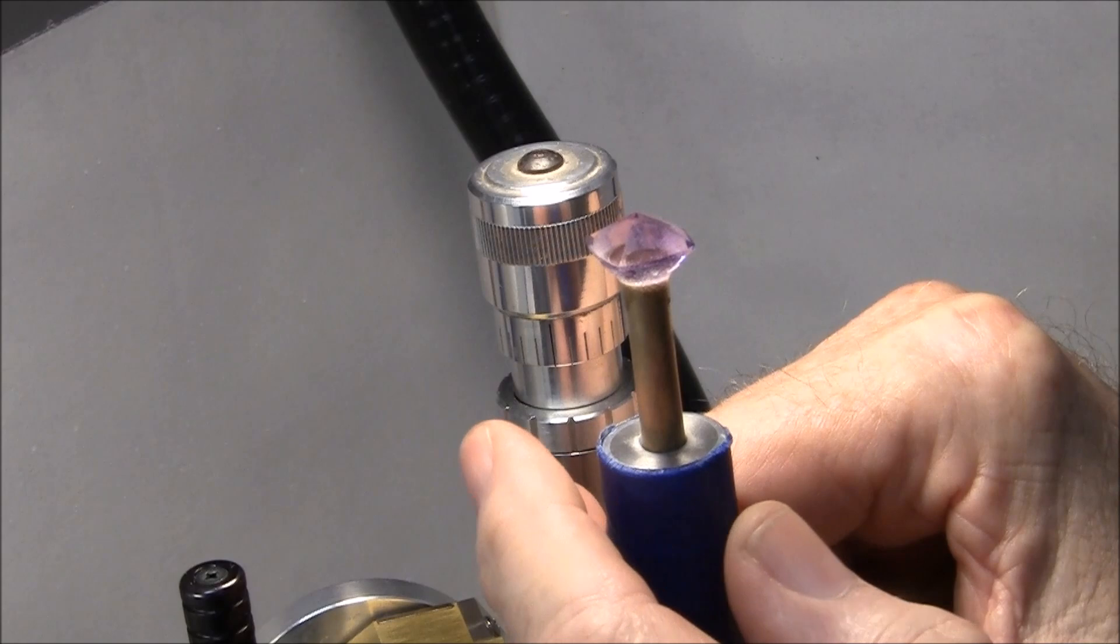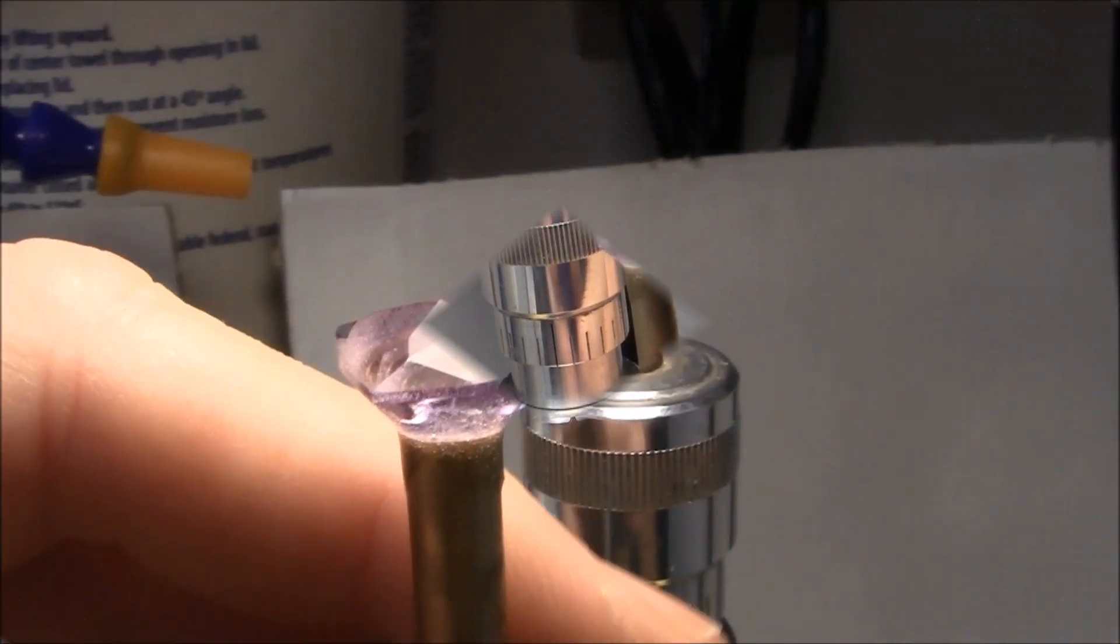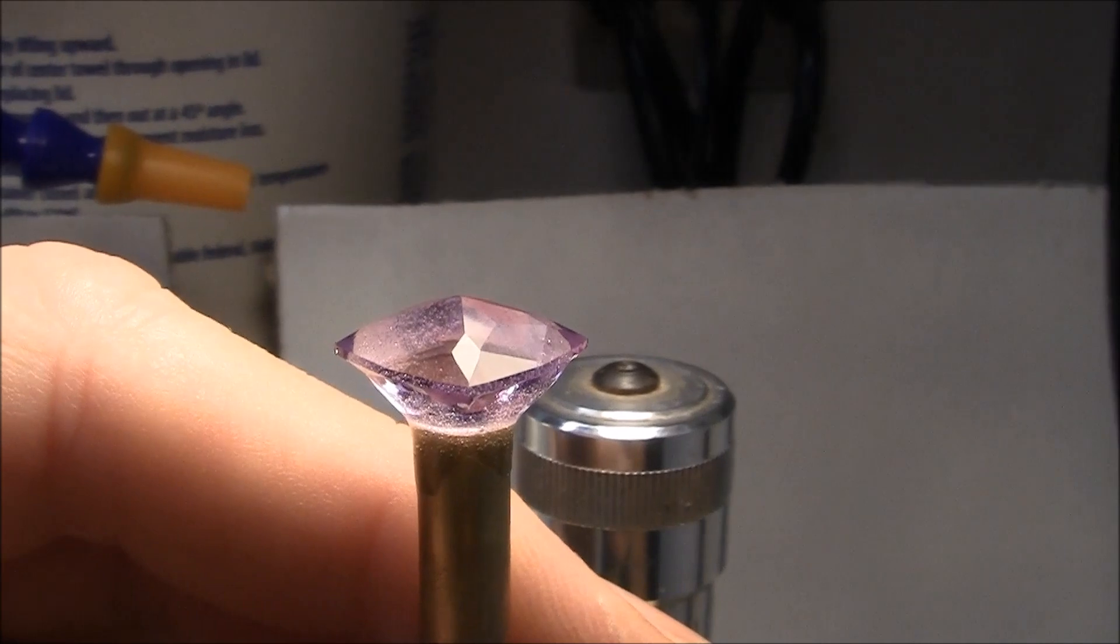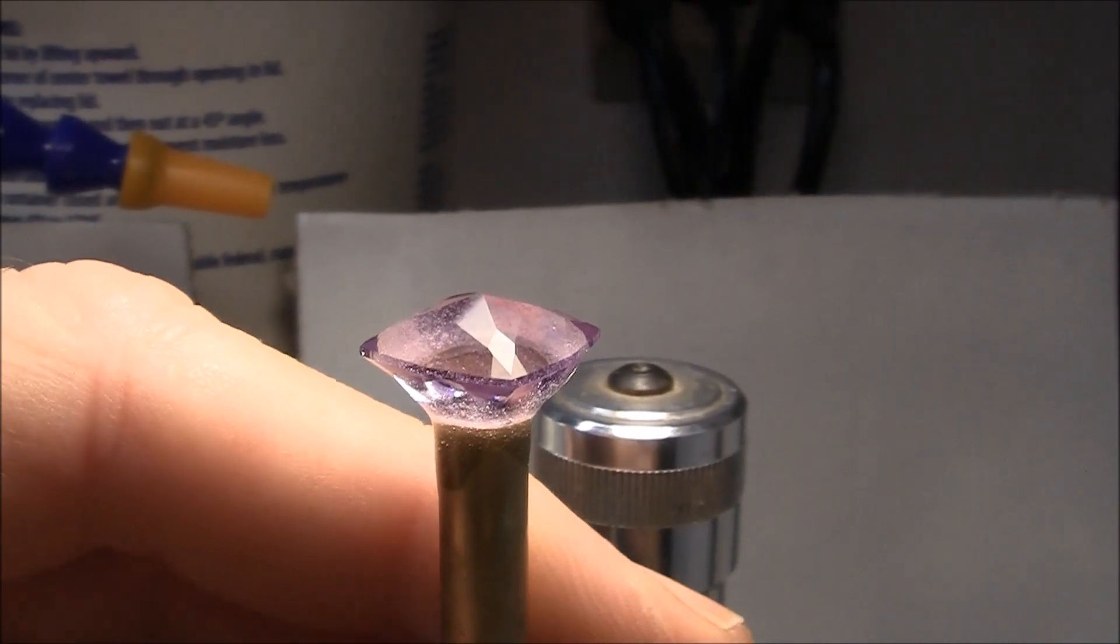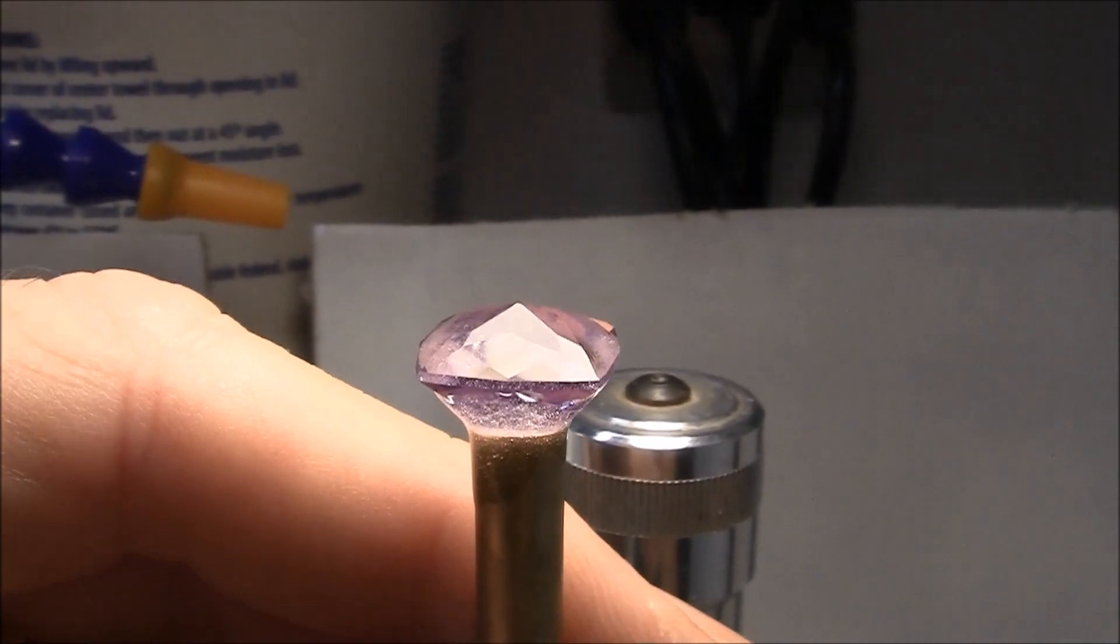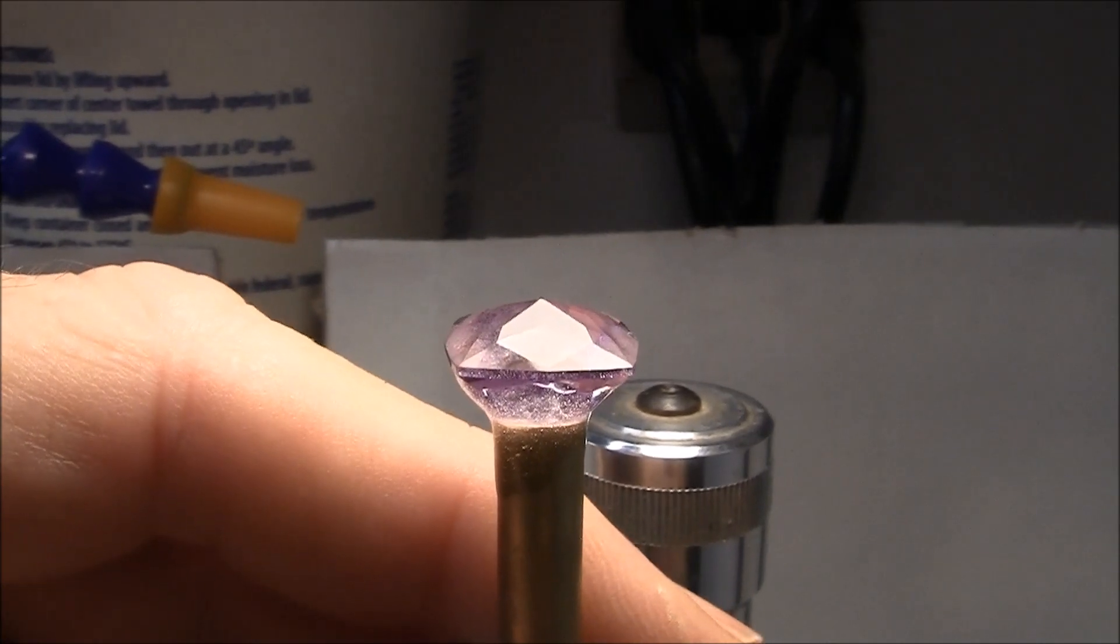I'm working on the crown facets. The crown facets have all been cut and I've cut with a 600 lightning lap which leaves a very smooth finish.